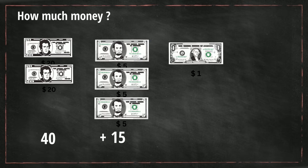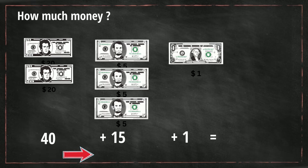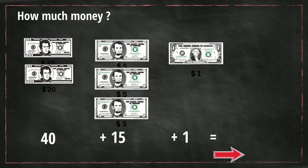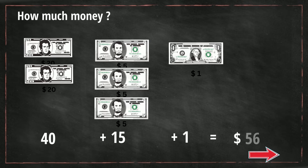And then we have one dollar bill. So when we add all this together, we have 40 plus 15, which is 55, plus one is $56.